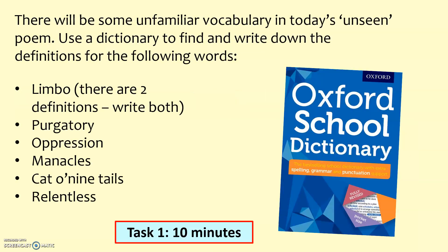With that in mind, this is activity number one. This one should take you about 10 minutes, so make sure you can see a clock somewhere and be ready. As it says at the top, there's going to be some unfamiliar vocabulary in today's lesson. It's an unseen poem. Unseen poetry is something that you will have to write about in your GCSEs, which is why we're starting to practice it now in Year 9. It's not about learning poems — it's about learning the skills of how you approach a poem and any text. For this unit we call it unseen poetry.